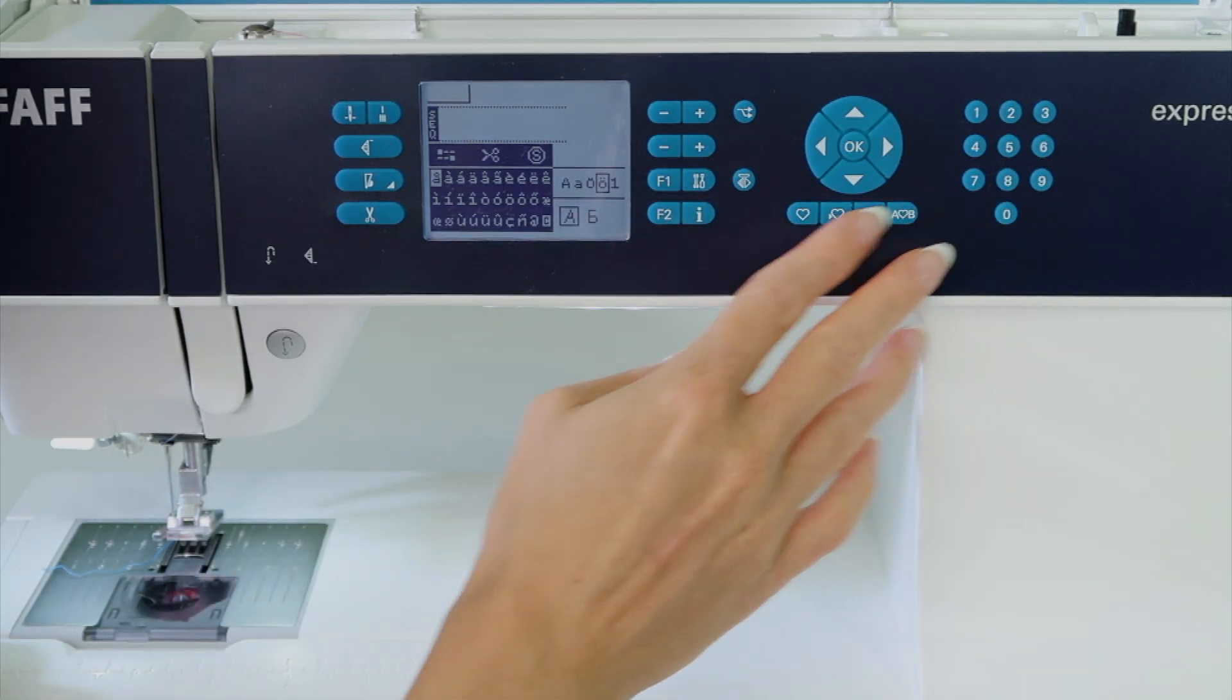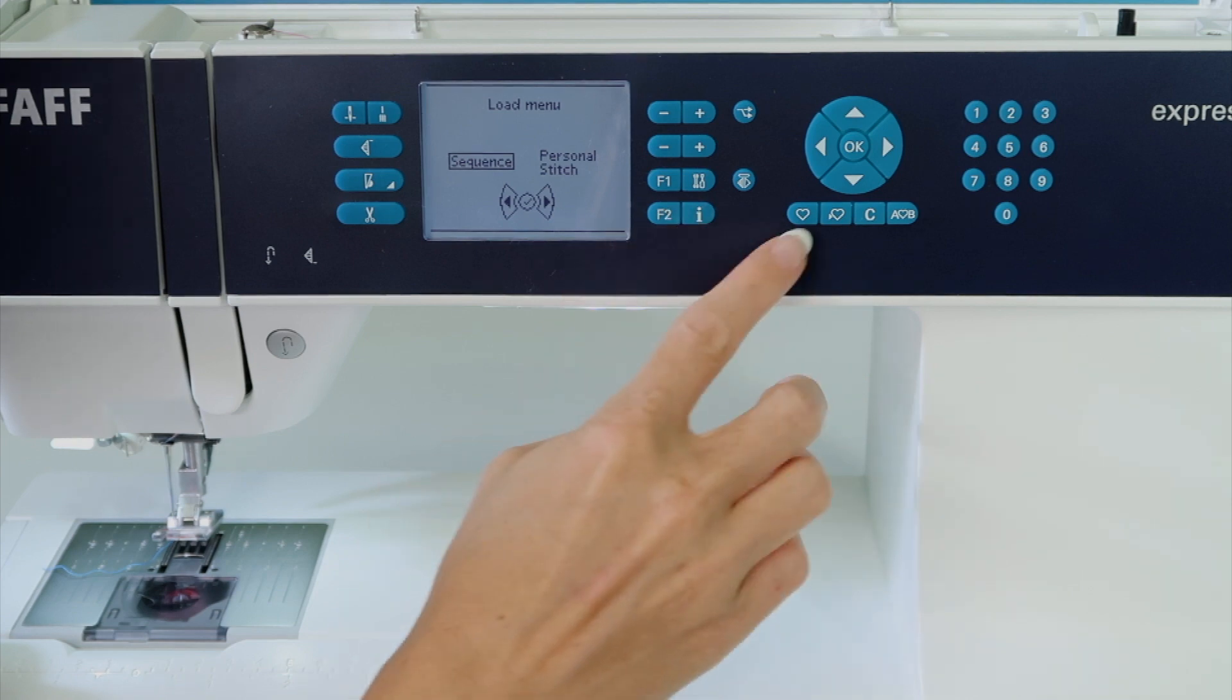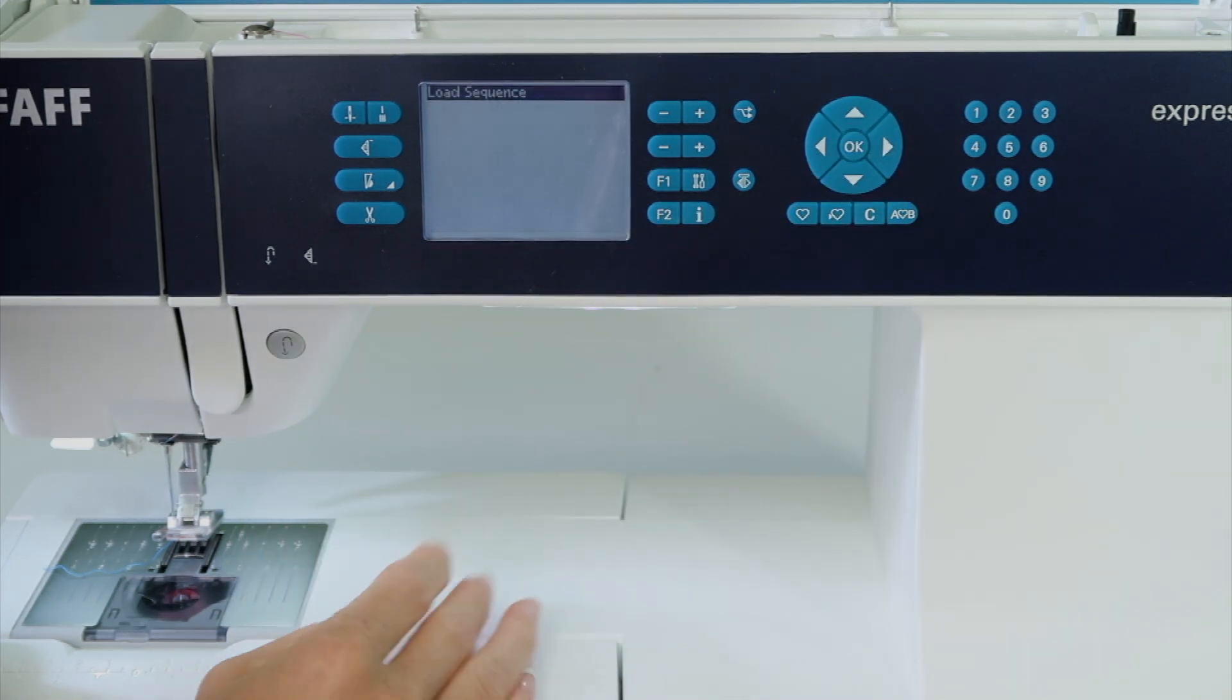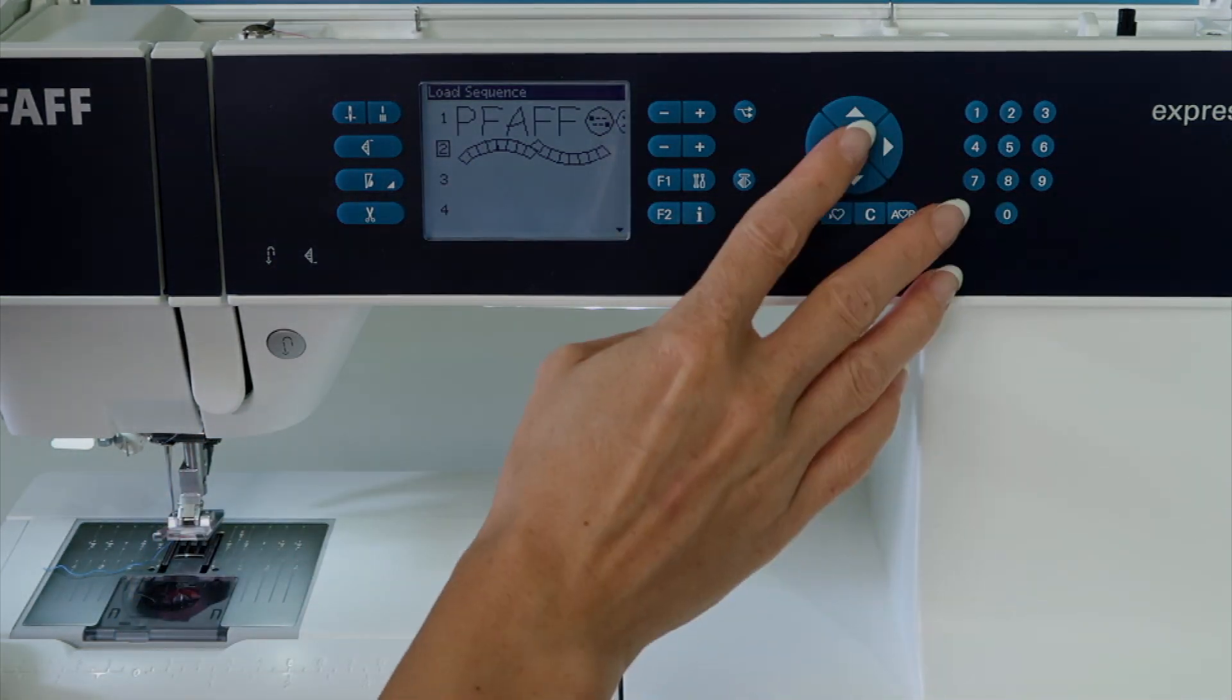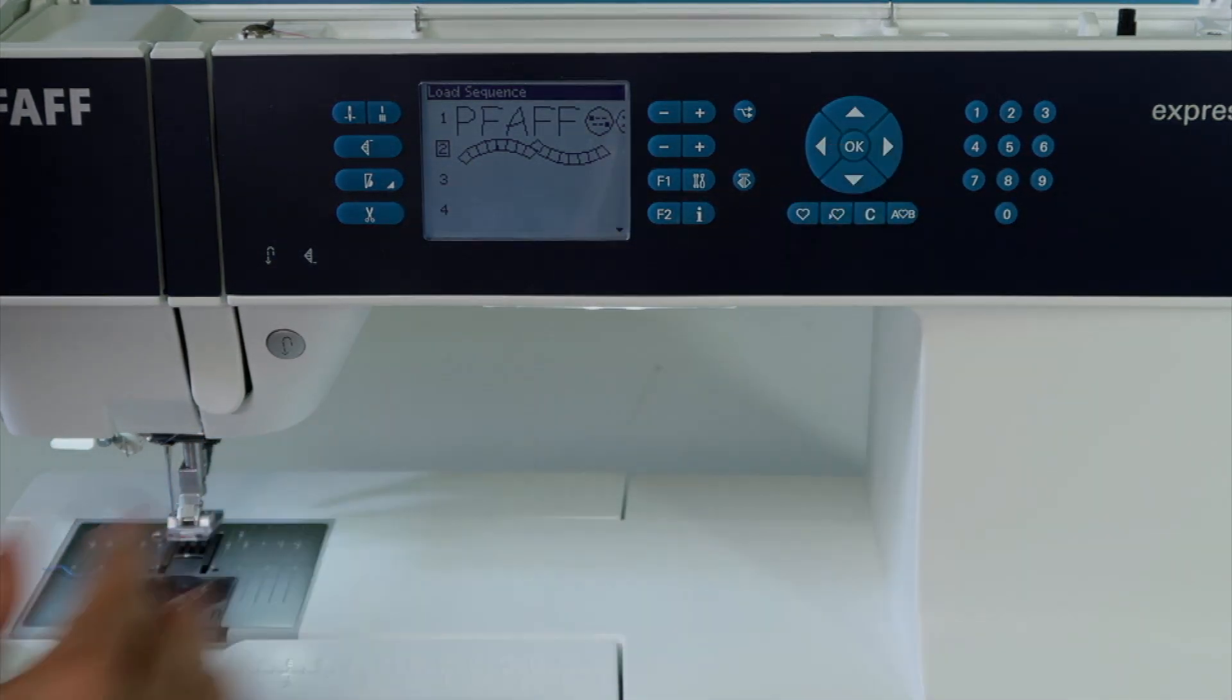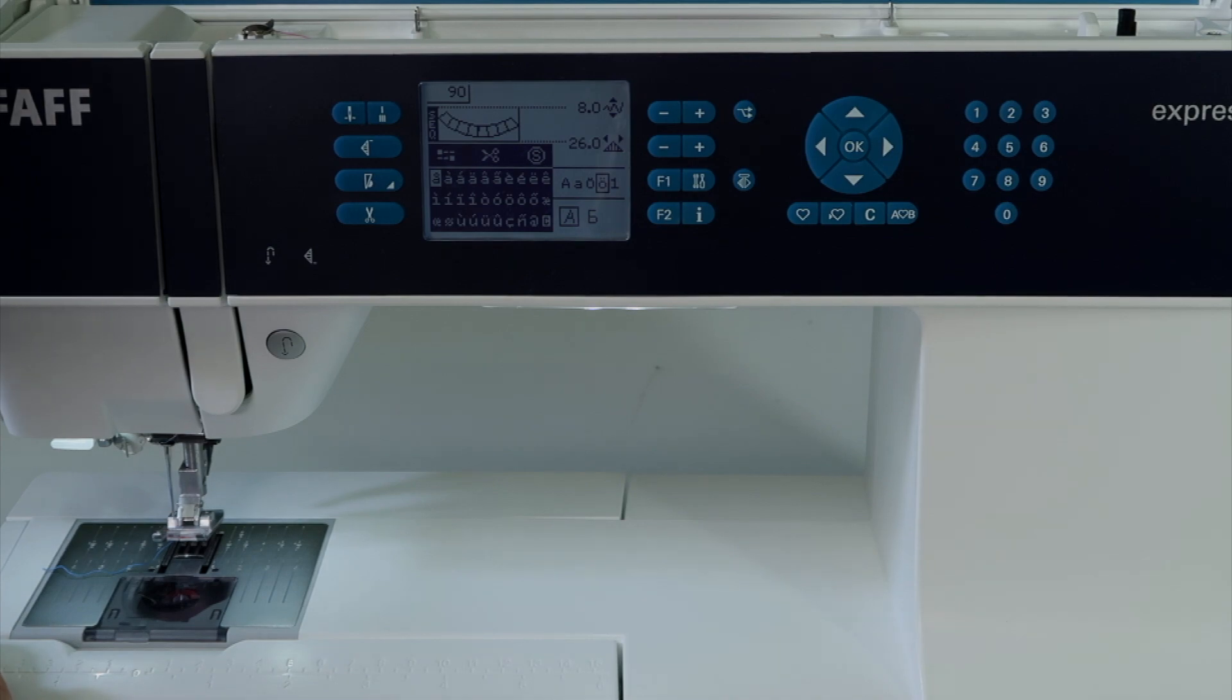Also, once you have saved it, you can also bring, touch the heart, and it will load from what you have saved. So if I want to pull up the decorative stitches I saved, pick the line you want, touch okay, and then you're ready to stitch.